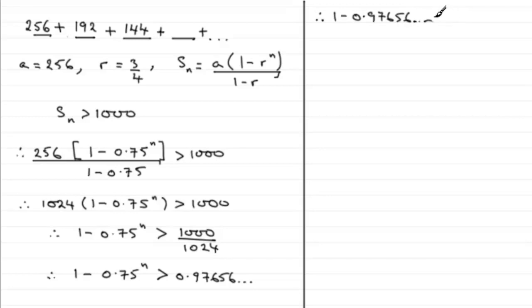So therefore what we're going to have is 1 minus 0.97656 and so on is greater than 0.75 to the power n. And now I'm just going to reverse this round. We can subtract this, we end up with 0.02343 and so on, which is greater than 0.75 to the power n.